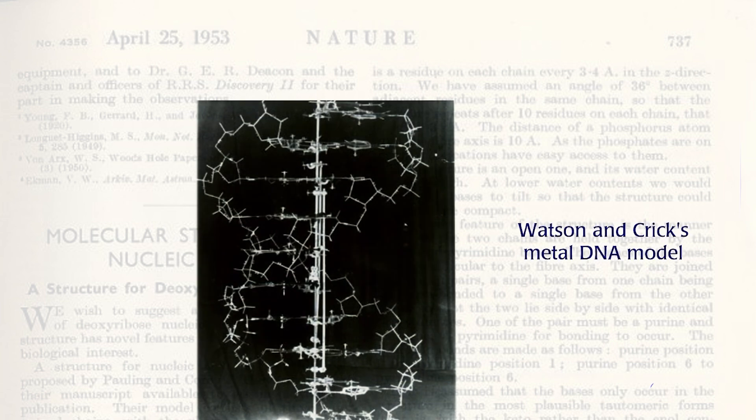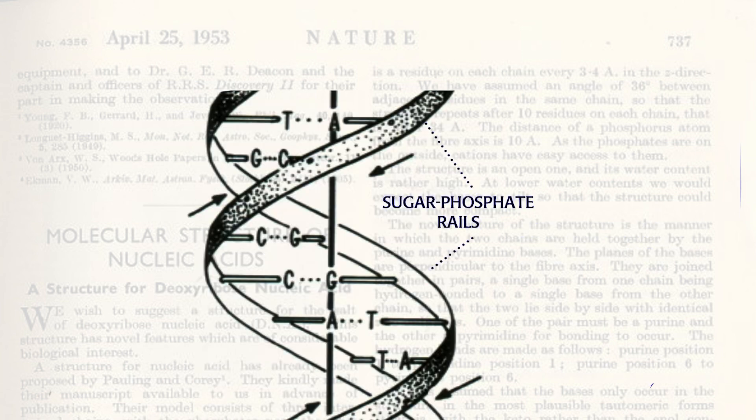Everything clicked into place beautifully. Upon looking at this model, everyone, including Maurice and Rosalind, agreed that they had the right DNA structure. So DNA is like a twisted ladder where the sugar and phosphate are the rails and the base pairs are the rungs. The rails run in opposite orientation to each other.